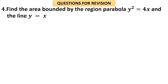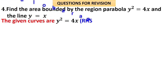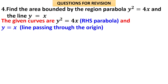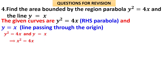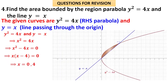Find the area bounded by the parabola y² = 4x and the line y = x. The given curves are y² = 4x (a right-hand-side parabola) and y = x (a straight line passing through the origin). To find where they meet, substitute y = x into y² = 4x to get x² = 4x, so x² − 4x = 0, giving x = 0 and x = 4.